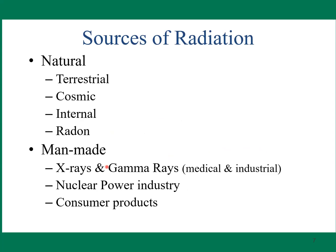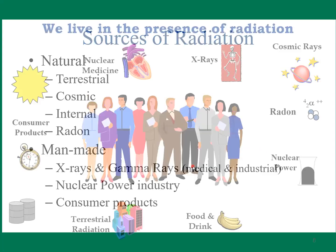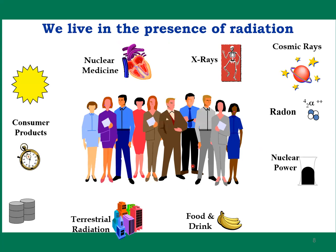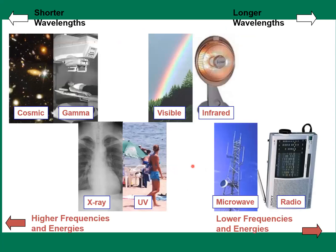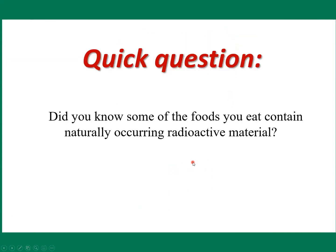Sources of radiation — both natural and man-made — are given here. We are surrounded by radiation as well. These represent the range from shorter wavelength to longer wavelength, showing different kinds of radiation spectrum. Quick question: did you know some of the foods you eat contain naturally occurring radioactive material?